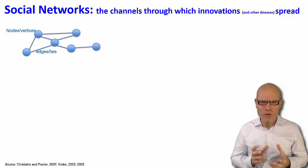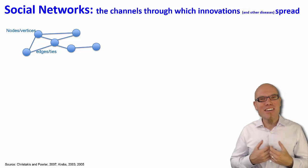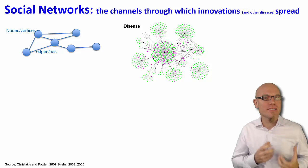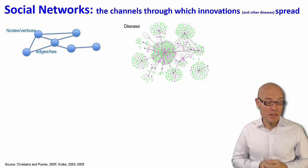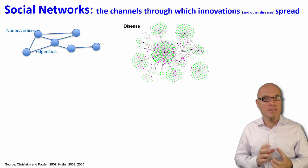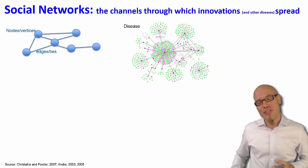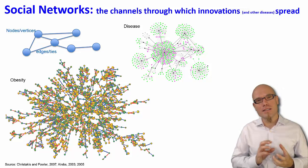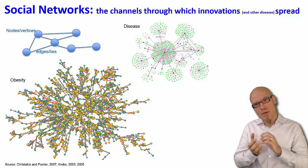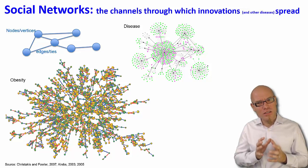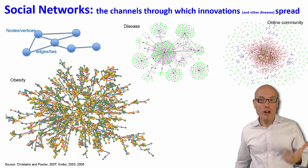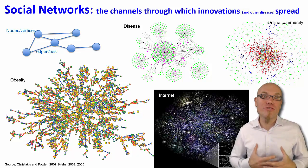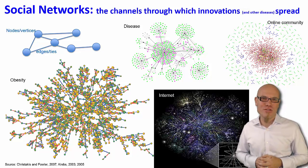Social networks usually never come in such a regular form as a grid. What makes social networks interesting is that they have an intricate structure which we can then study. For example, here you see a network used to study the spread of a disease — the contagious effect, which works very similarly to the diffusion of innovations. You can see separate clusters, which are important because they affect how infection spreads. Another network has been used in a health study of the spread of obesity — obese people tend to cluster together, as do non-obese people. Here's another online community, and here is the entire internet — which plays a big role in the diffusion of information and therefore the diffusion of innovation.